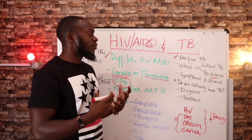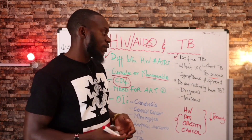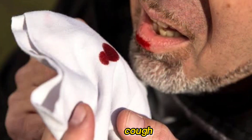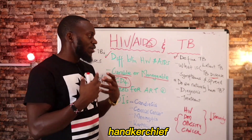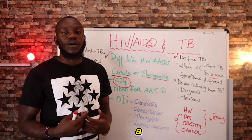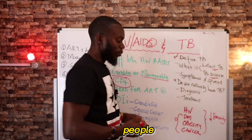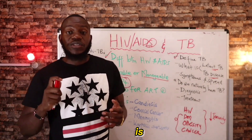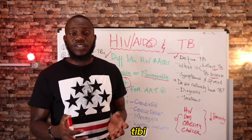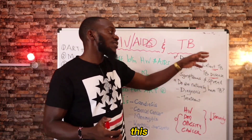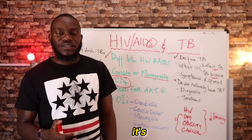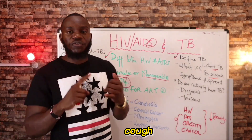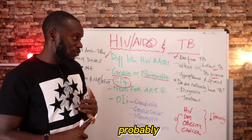If TB affects the lungs, which is most common, you will have coughing — you can even cough blood — and it is profuse coughing. If you don't cover your mouth with your elbow or a handkerchief when coughing, those droplets go into the air, and that leads to latent TB in other people. They acquire it from a person who has coughed, laughed, sung, or talked. However, you cannot acquire TB through kissing because it is an airborne disease — it is not passed through saliva but through air droplets.